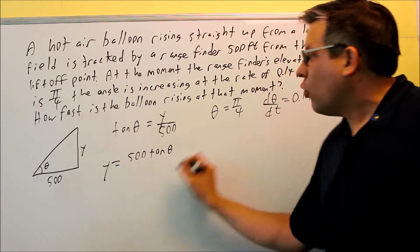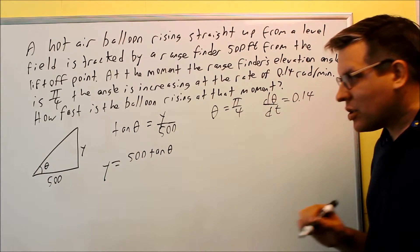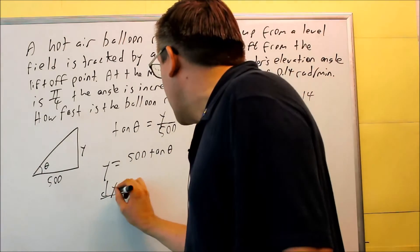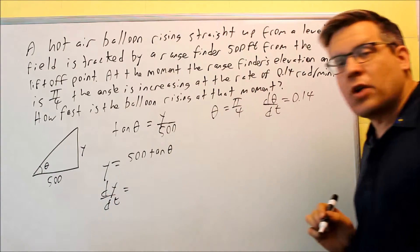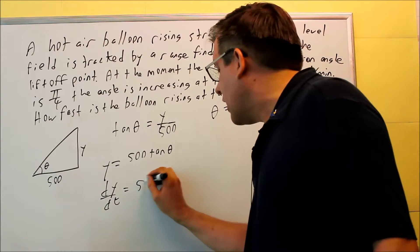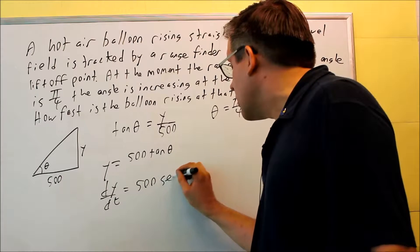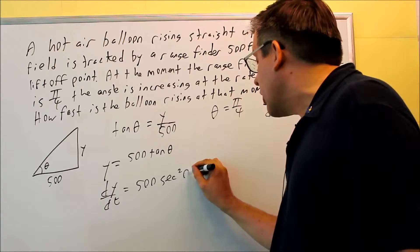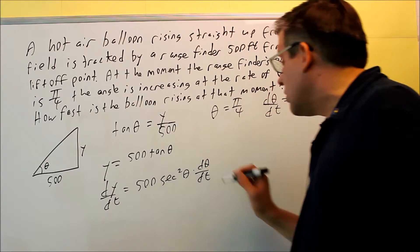That's what we're going to get when we take the derivative of this with respect to time. So I'm going to get dy dt here. That's taking that derivative with respect to time. Let's do the same thing for the right-hand side: 500, the derivative of the tangent is secant squared, so I have secant squared theta and then d theta dt.